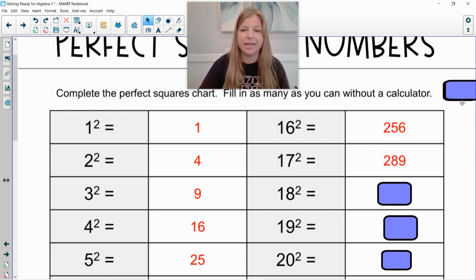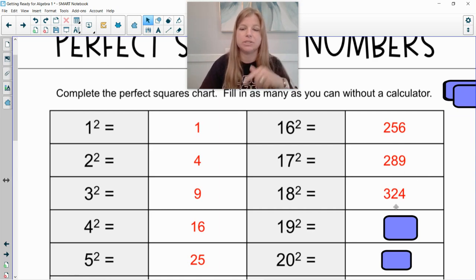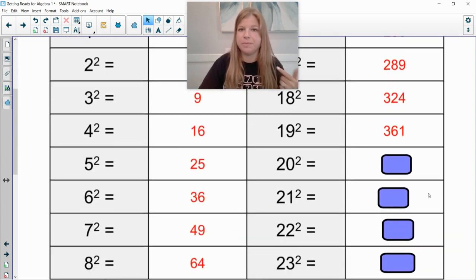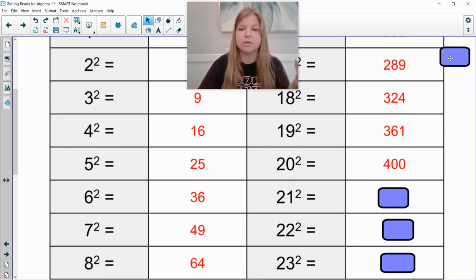17 squared is 289. 18 squared is 324. There's only two perfect squares in the 300s. It's 324 and then 19 squared is 361. 20 squared. That should be easy. What's 20 times 20? Well 2 times 2 is 4 and then you have two sets of zero, two zeros there. So 20 times 20 is 400.